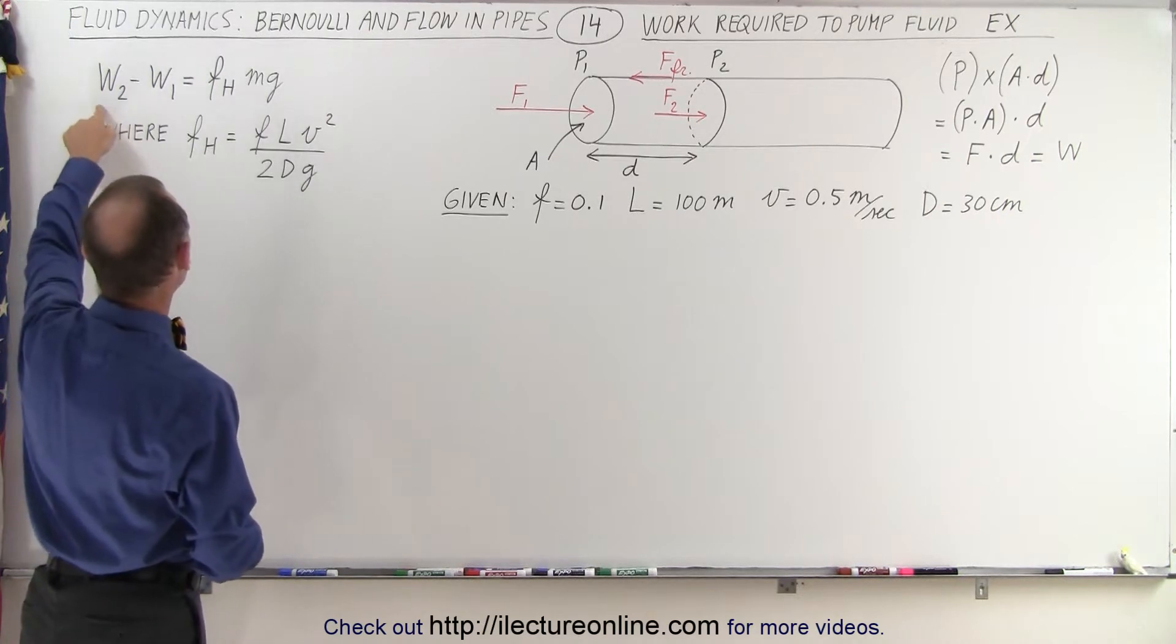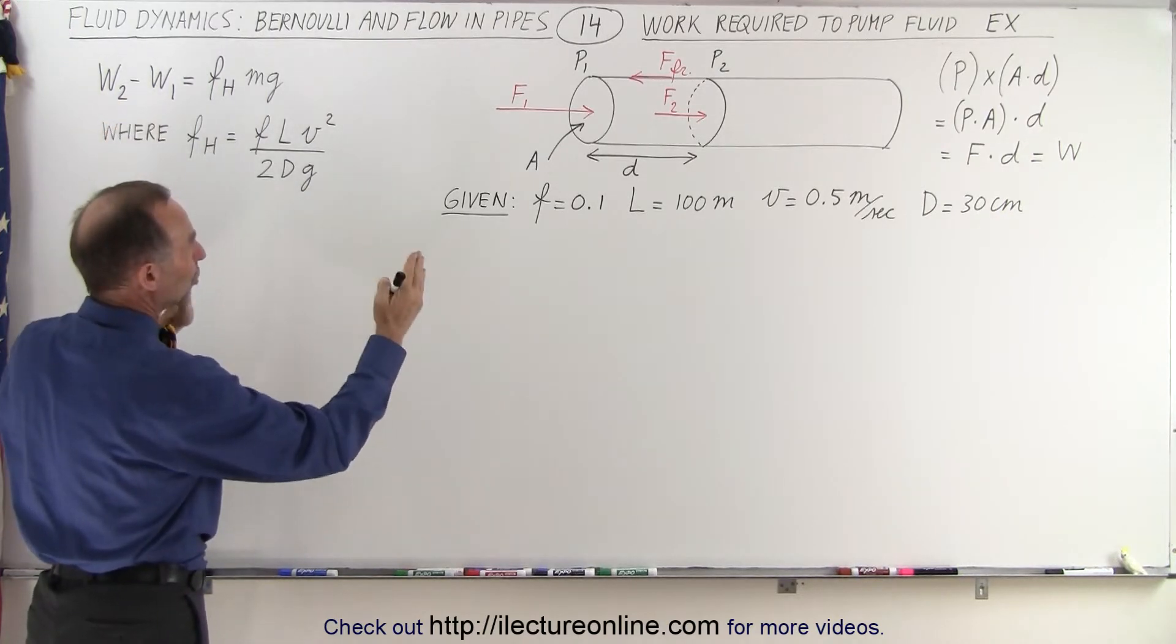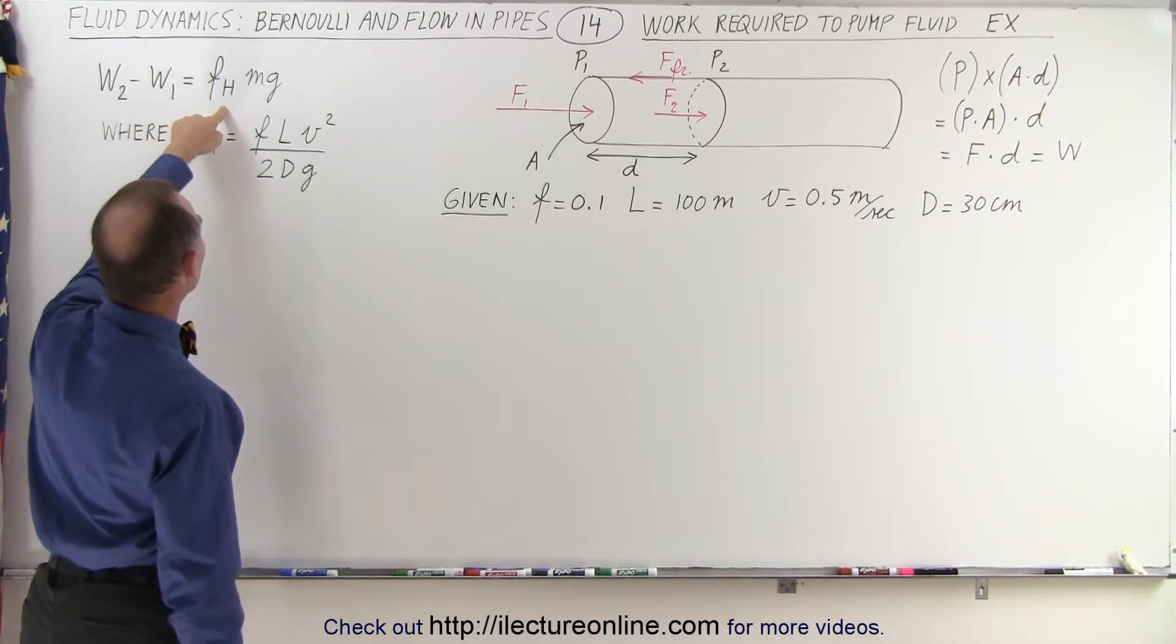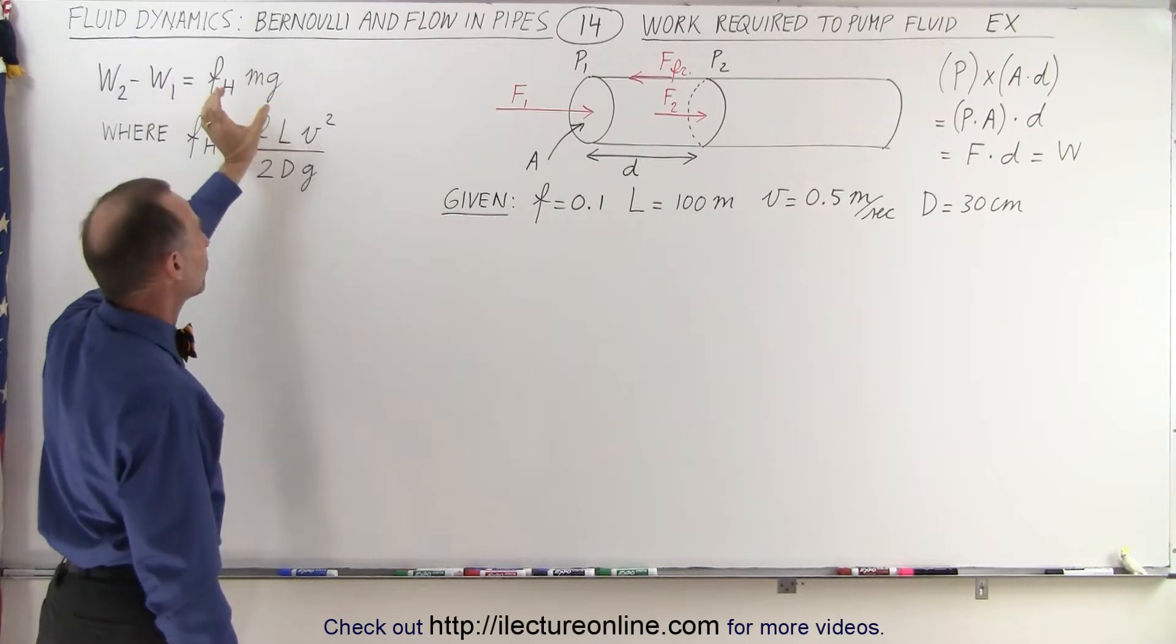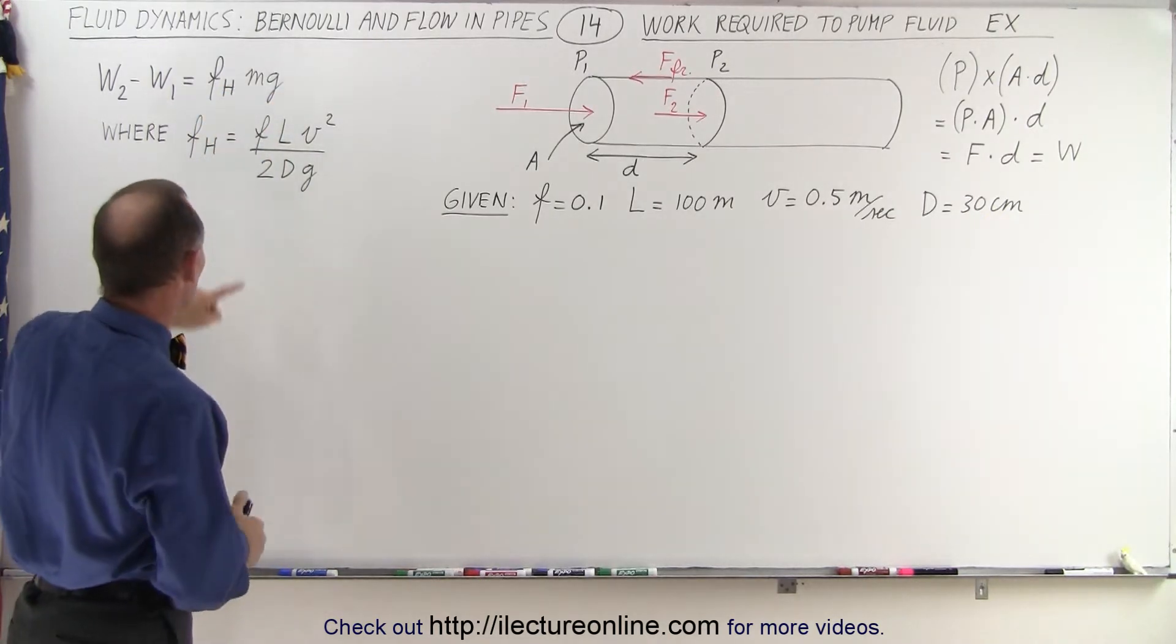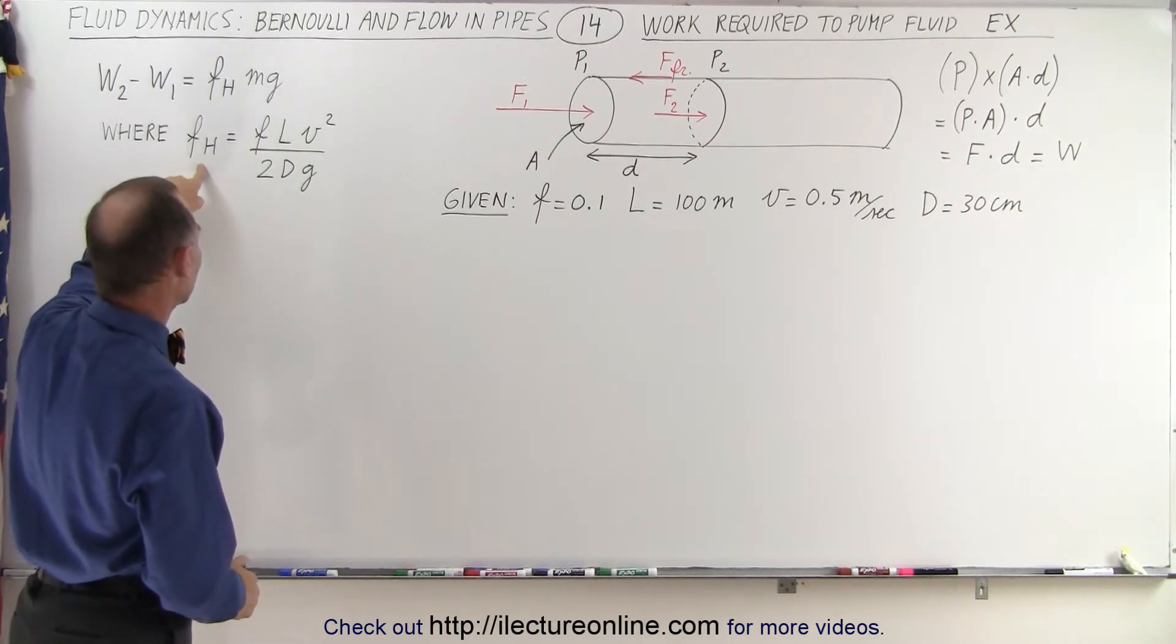And remember that the work, the work difference between 0.1 and 0.2, in this case it will be 100 meters apart, is going to be the frictional head loss times the mass NG, which means times the weight of the fluid within that section. So we have the definition for the frictional head loss.